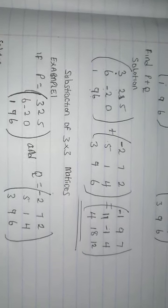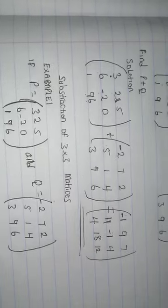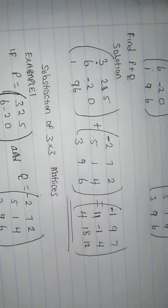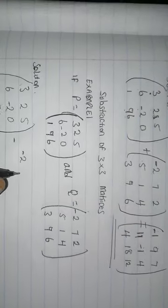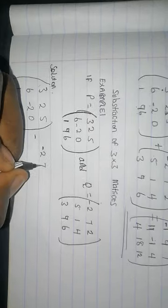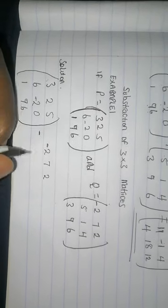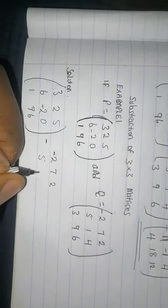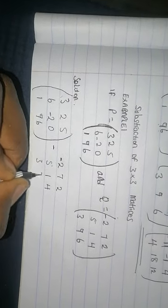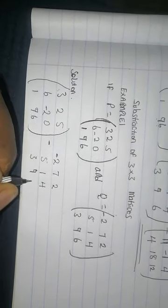Then I subtract Q which is negative 2, 7, 2, 5, 1, 4, 3, 9, 6.